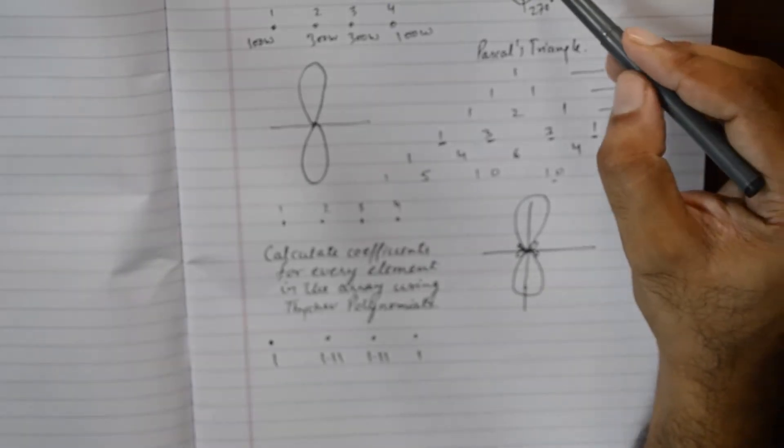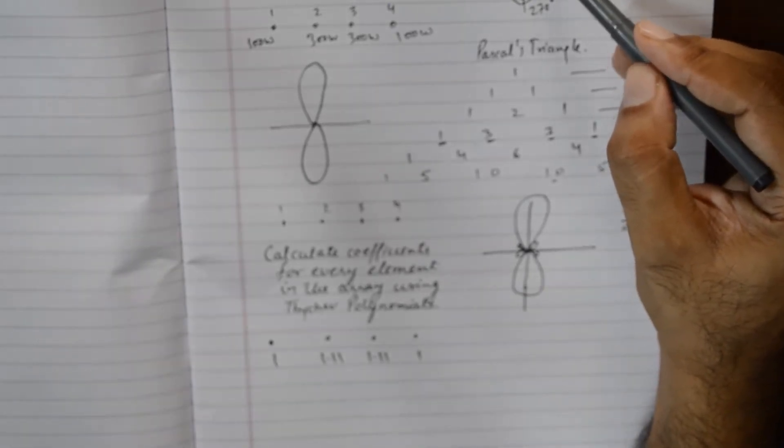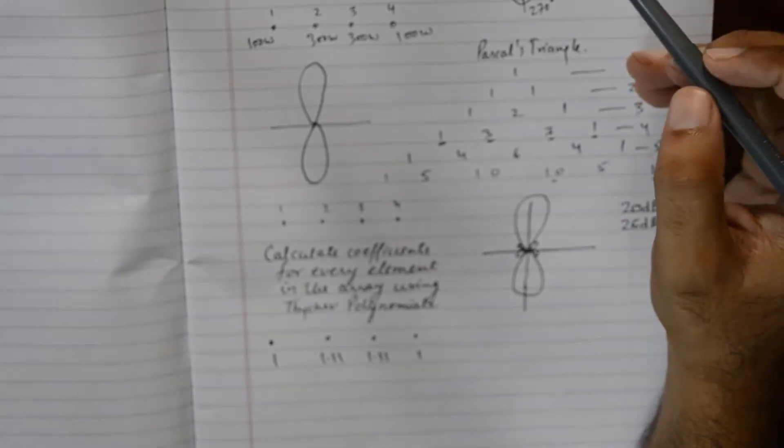If you want to see the detailed method of calculating these coefficients, you could look up my video on designing Dolph Chebyshev array. And if you want to understand how the side lobes are drawn at which angles, you could look at my video on broadside versus endfire array.